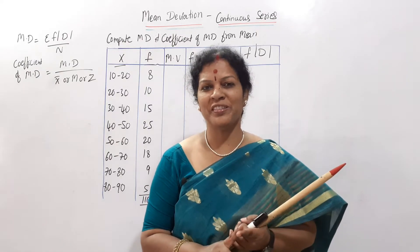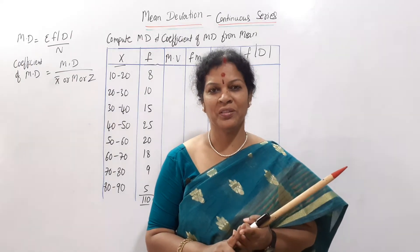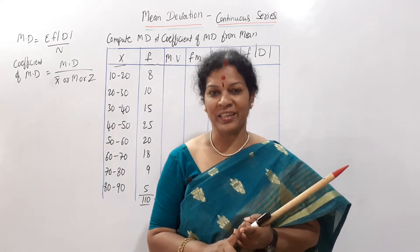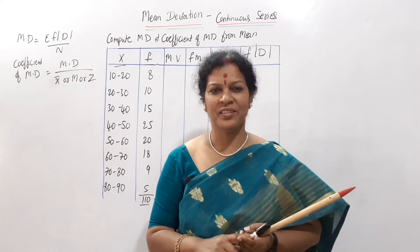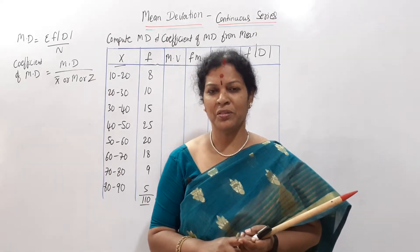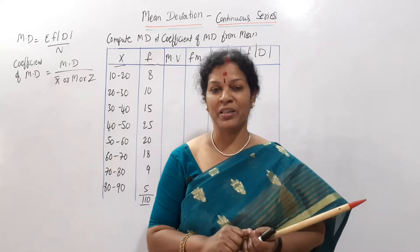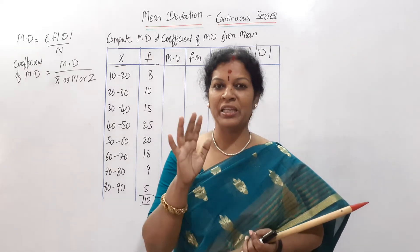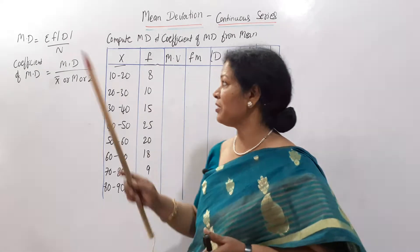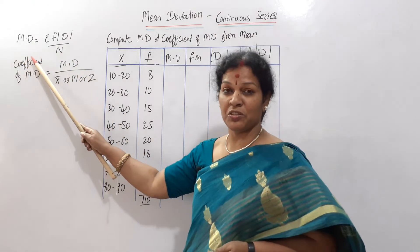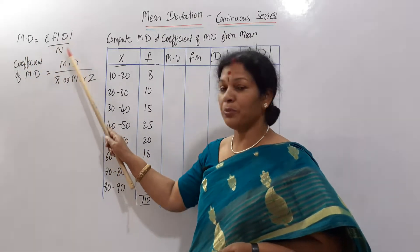What was the formula for individual series? Mean deviation is equal to sigma mod d by n. Discrete series, mean deviation is equal to sigma f into mod d by n. Same formula even for continuous series also, sigma f into mod d by n.